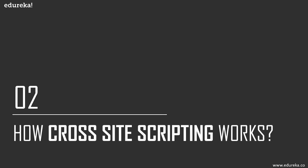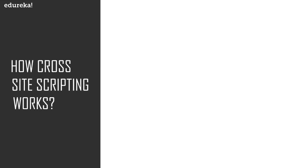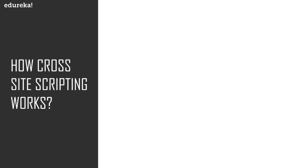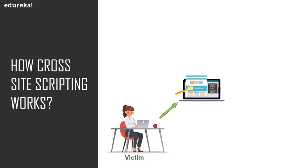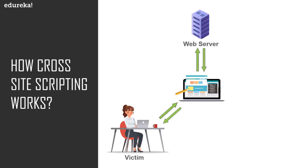Let's see how cross-site scripting actually works — the logic behind this attack. Cross-site scripting is a web application hacking technique, so you need a website, a web server, and a victim. When you access a website, you use an internet connection to interact with a web page, send data to the web application, and there's a transaction of data happening between you and the web server through the website. You send a request to the web server, and the response is sent back to you through the web page.